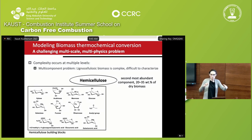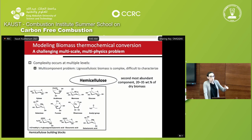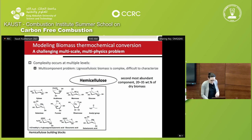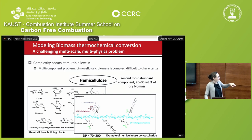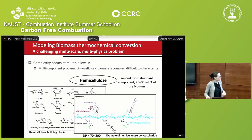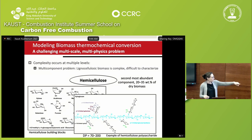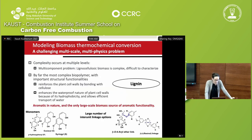Hemicellulose is the second most abundant component — 20 to 35 weight percent of dry biomass, though this can vary widely between sources. It becomes a bit more complicated: it doesn't have just one repeating unit, but many that can attach to each other in different ways. When you look at the types of polymers you end up seeing, you have long chains but sometimes with stuff sticking out — it's a bit more fuzzy in terms of structure, but more compact, with 70 to 200 units per molecule.